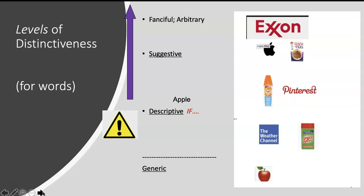The levels of distinctiveness is mostly for words. You could also look at the Apple logo and say that seems somewhat fanciful in terms of it's an image. But for the most part, this works best for words in terms of the other categories, such as if you jump down to descriptive, for which there's a caution sign.